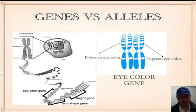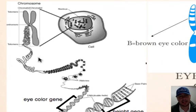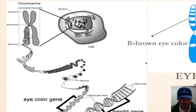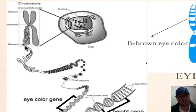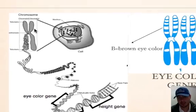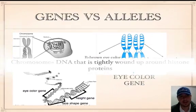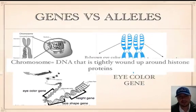Once we have our DNA, remember it's organized into chromosomes so that it can fit into the microscopic nucleus of a cell. Basically, DNA is wound around proteins until you get this X shape — that's what a chromosome is. A chromosome is just DNA that is tightly wound up around histone proteins.